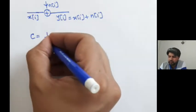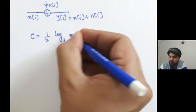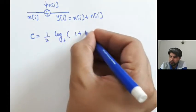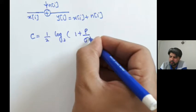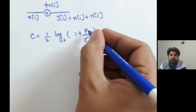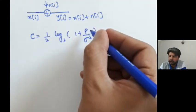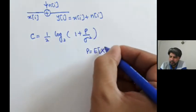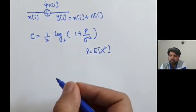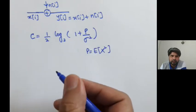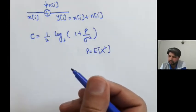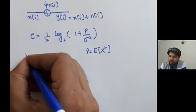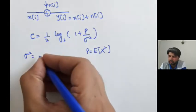We said that the capacity of a Gaussian channel is one half log base 2 of 1 plus P over sigma squared. If P was the expected value of x squared, was the transmit signal's average power, and sigma squared was nothing but the noise power.